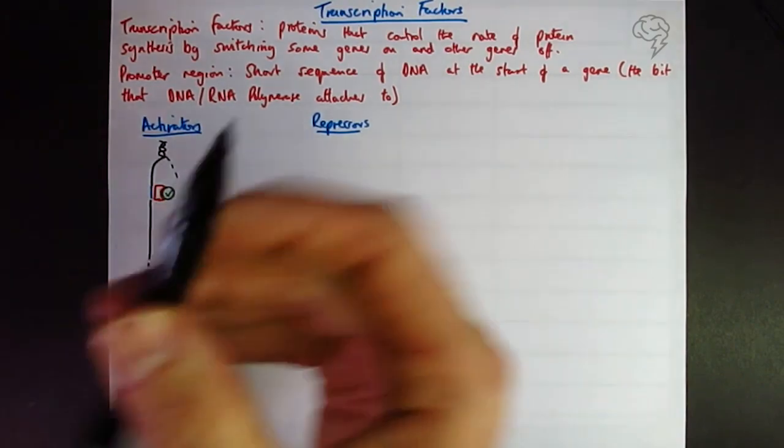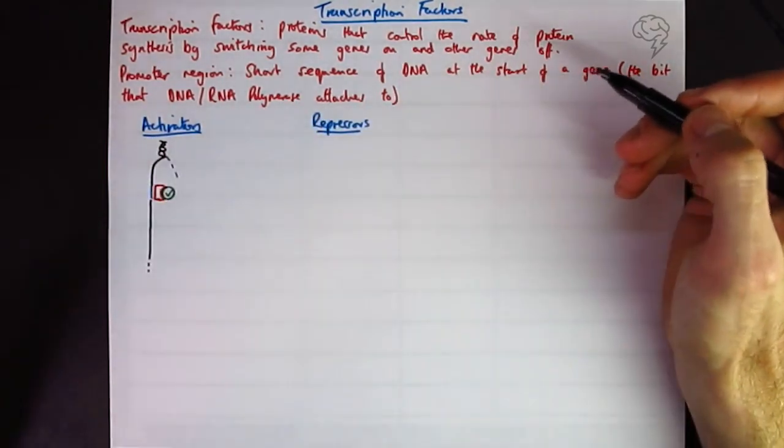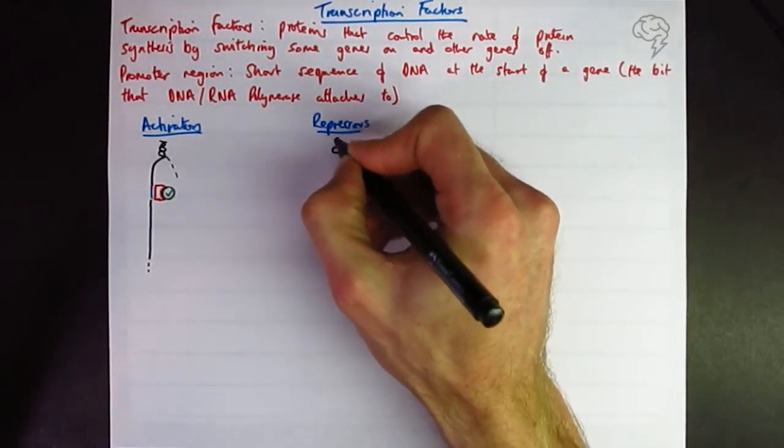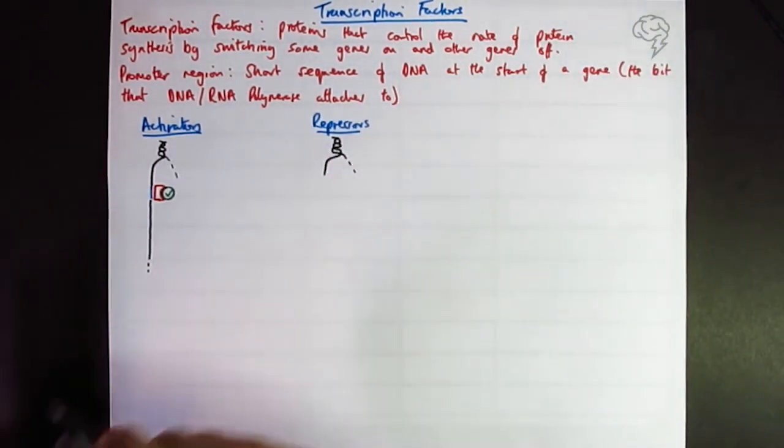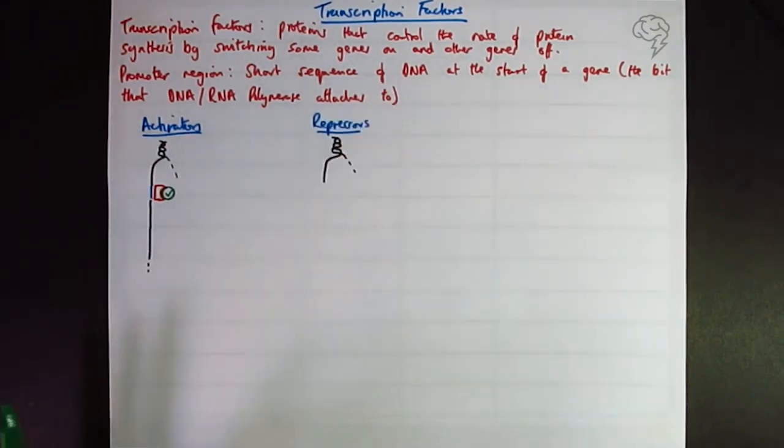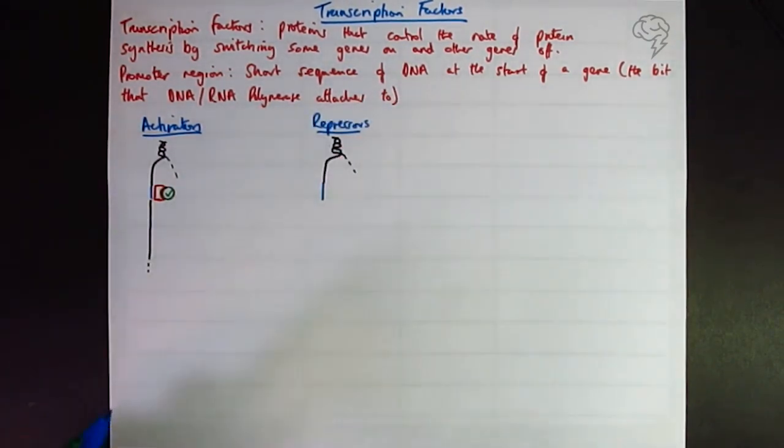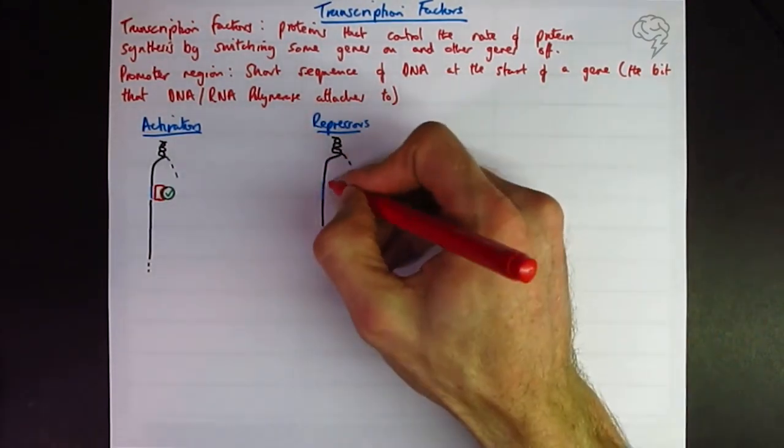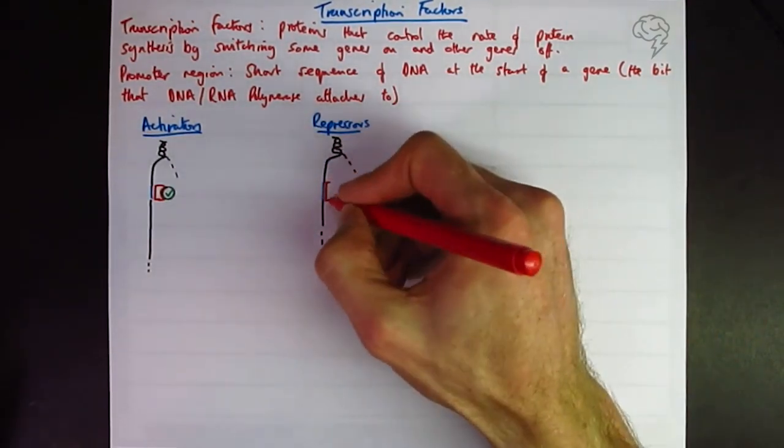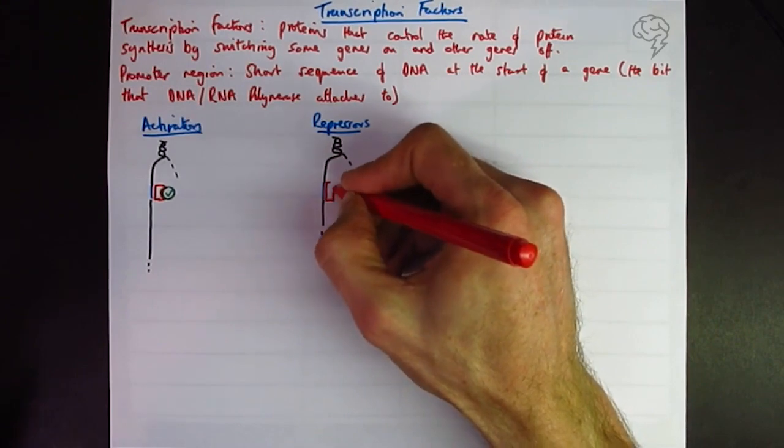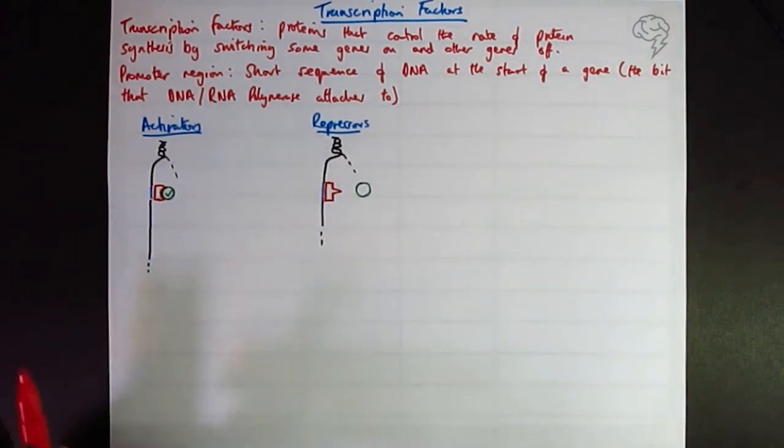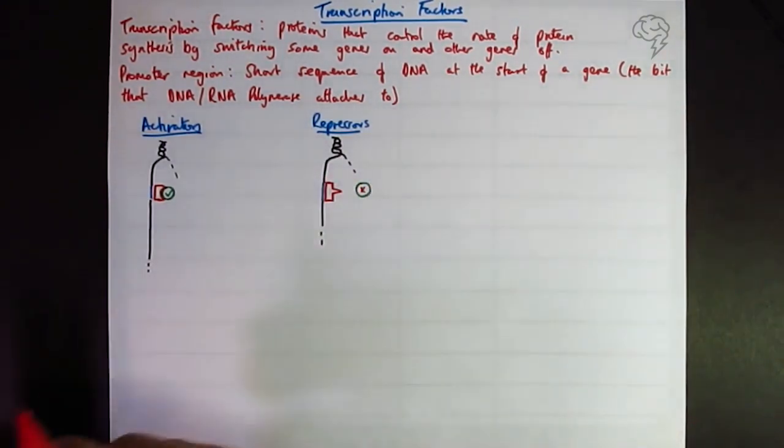And if it's a repressor, it's going to bind onto the promoter region and prevent RNA polymerase from binding on. Promoter region, DNA continuing off. I don't really care about the rest of it at the moment. So here, transcription factor, and this time I'm going to just make it a spike so that the RNA polymerase can't attach. Tick and cross.